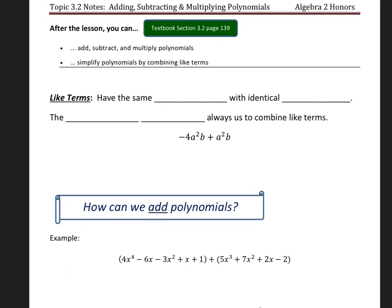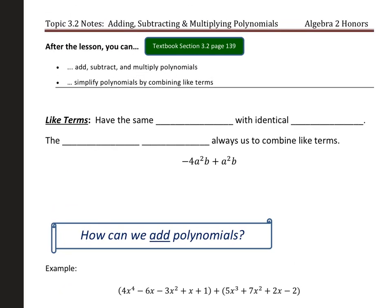To combine polynomials, we combine like terms. And like terms have the exact same variable with identical exponents.